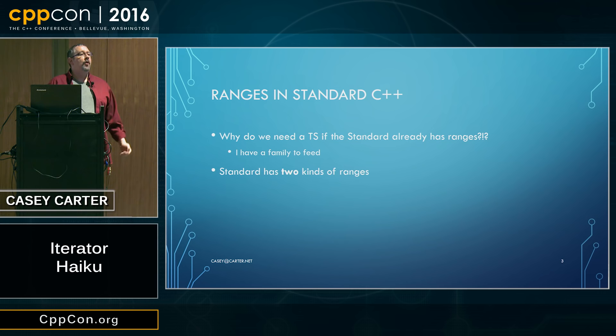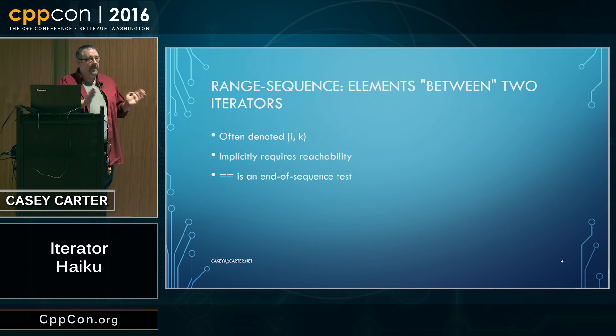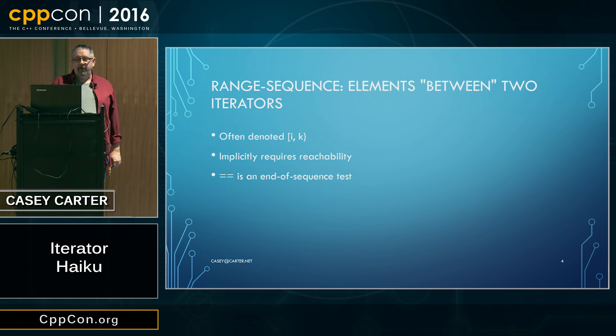The first kind of idea for what exists as a range in standard C++ is the range sequence notion. Ranges are sequences of elements that are between two iterators. These kinds of ranges are often denoted with interval notation as an iterator pair — an iterator i, an iterator k. The range of elements is everything from i up to, but not including, the element denoted by k.